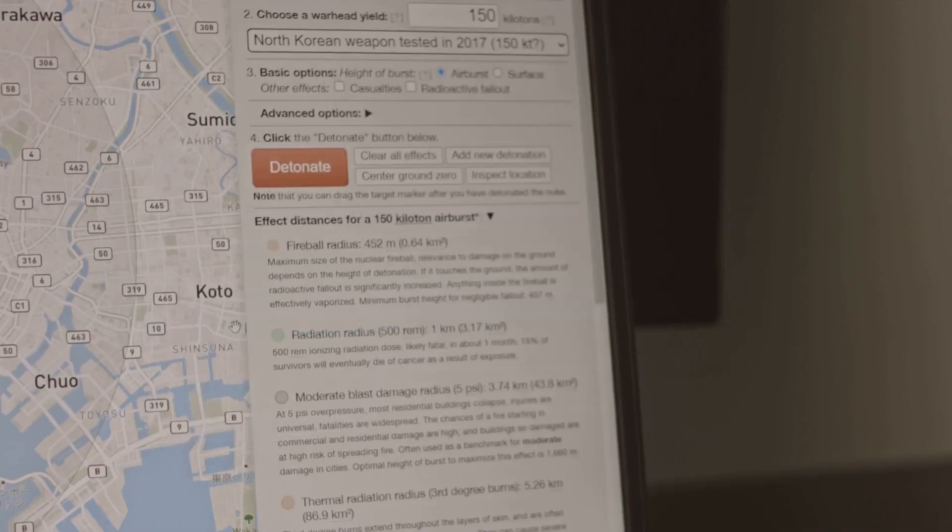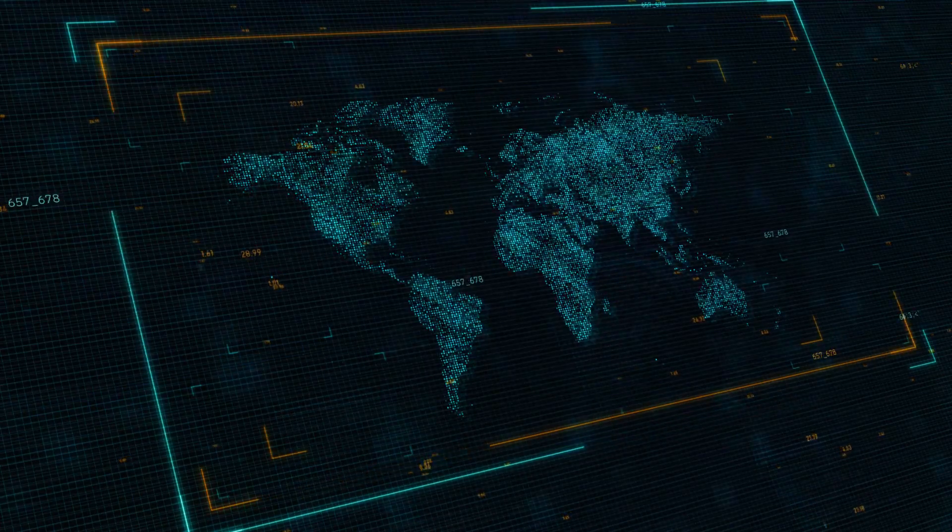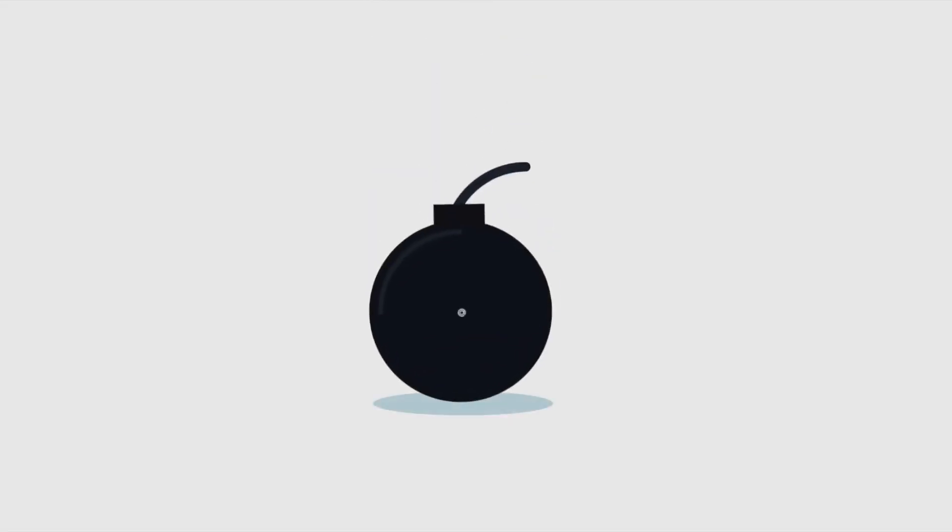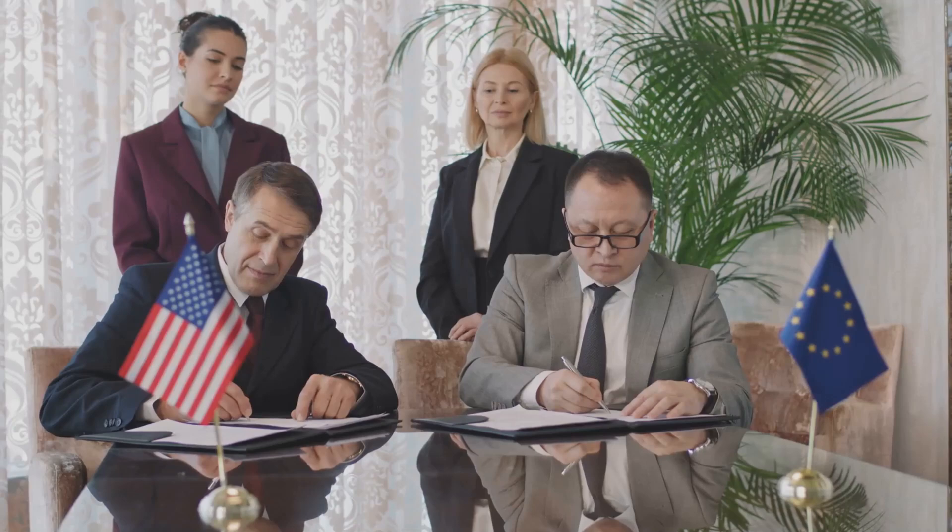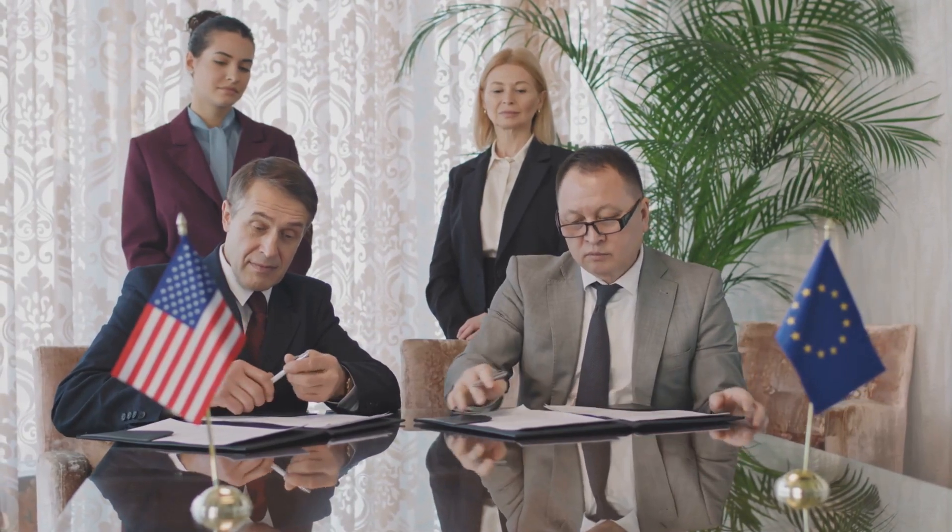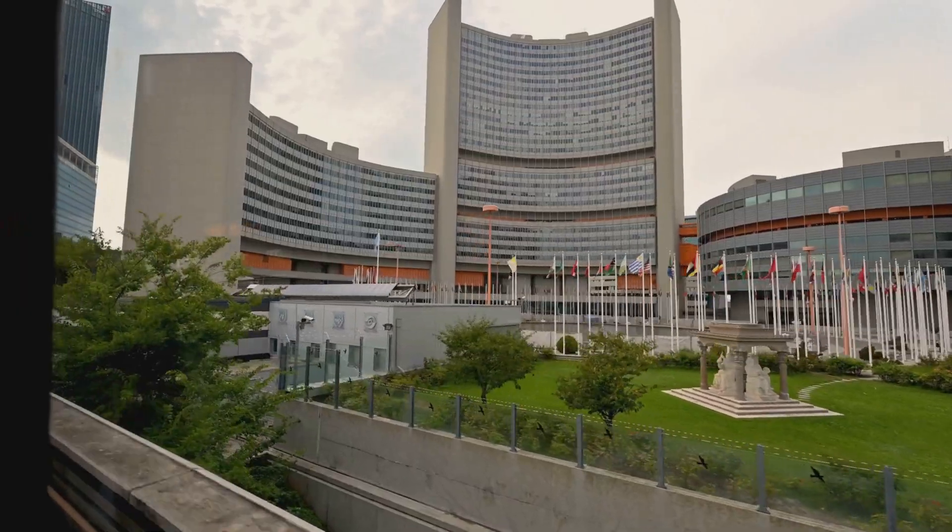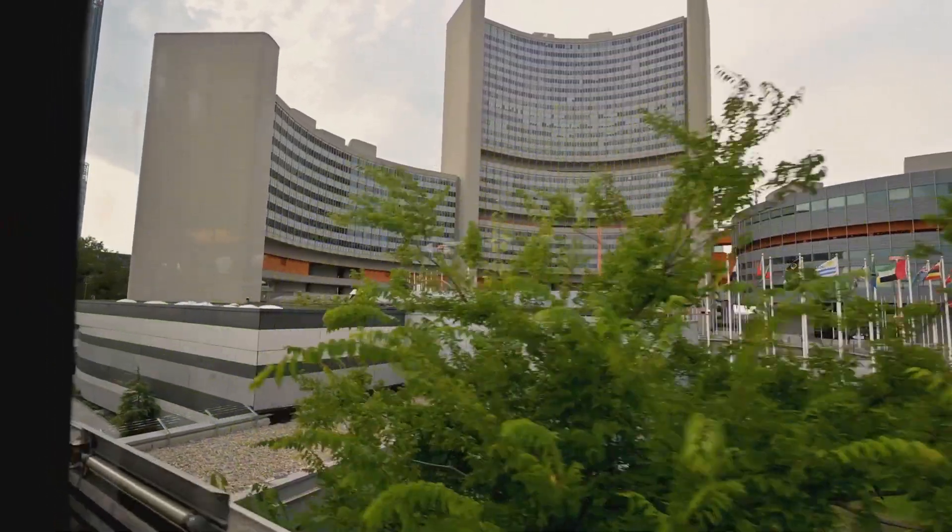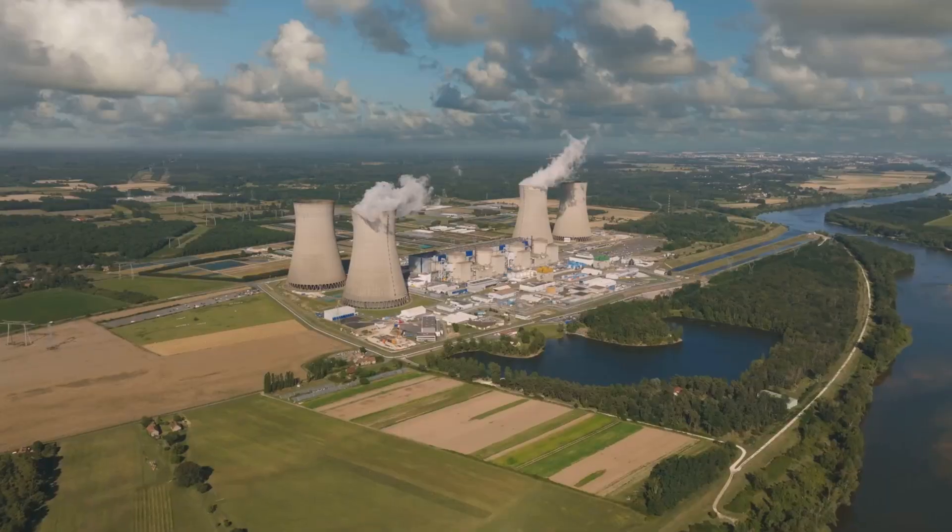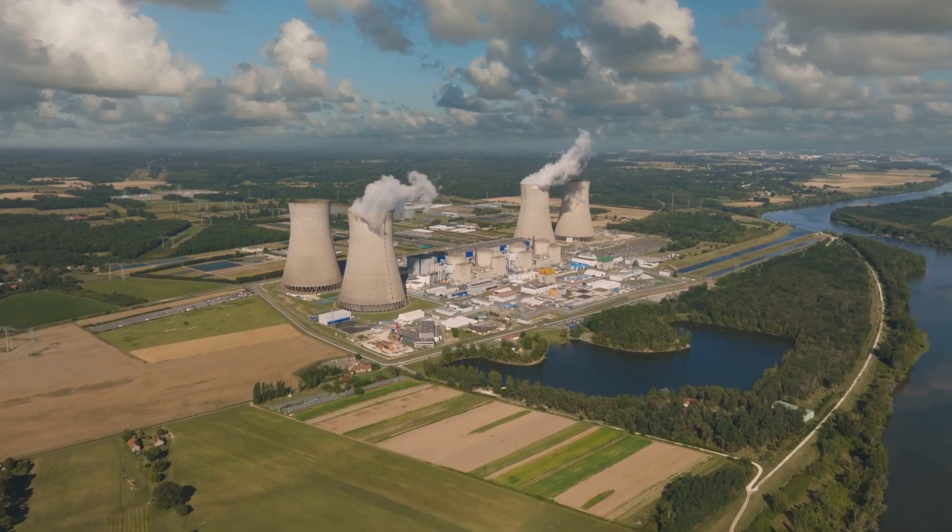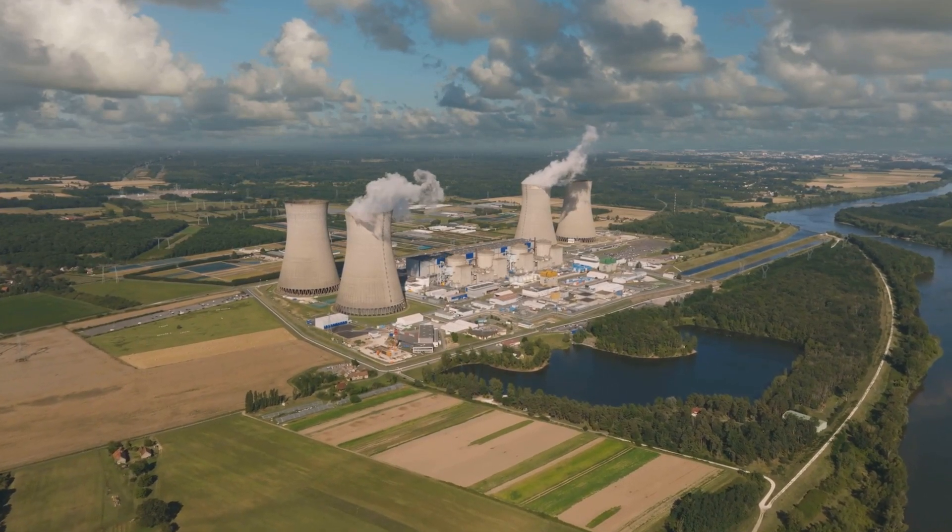The other major global concern is nuclear proliferation, which is the spread of nuclear weapons. Because plutonium-239 is a primary material for making these weapons, countries around the world have established treaties and inspection regimes to keep close track of it. The International Atomic Energy Agency, or IAEA, plays a crucial role in verifying that nuclear materials in peaceful programs are not diverted for military purposes.